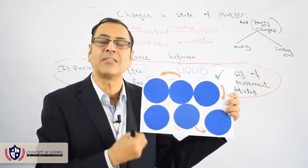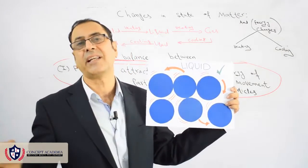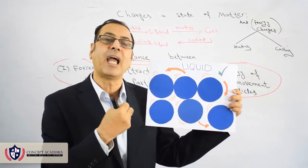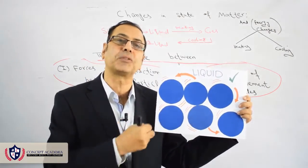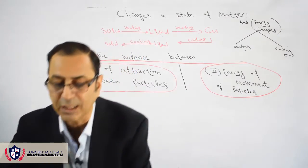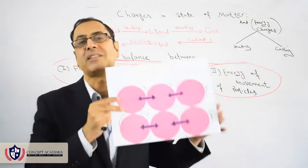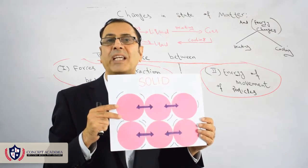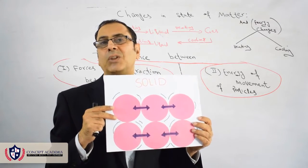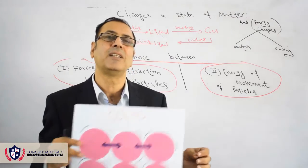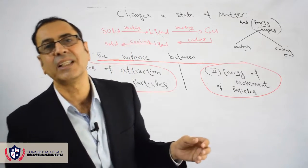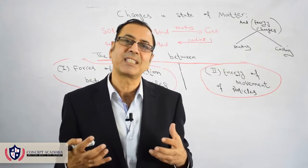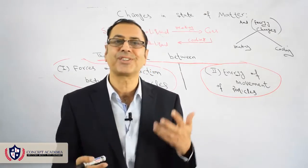Still cooling it down and taking out heat energy, the particles will further come closer and there are more forces of attraction between them. Ultimately they will take a closely packed form. In this way, by cooling, we can convert gas to liquid and liquid to solid. And all this takes place with energy changes.